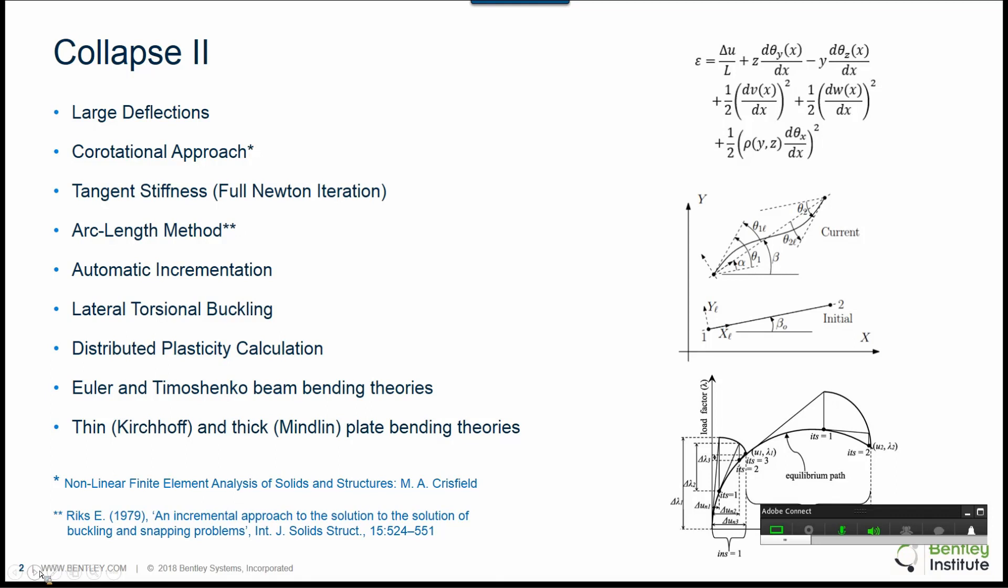The effects of lateral torsional buckling are included via the inclusion of the torsional strain components in conjunction with the co-rotational approach. Plasticity is allowed to develop gradually throughout the cross section of a member at any location along the member. And both Euler and Timoshenko beam theories are supported.